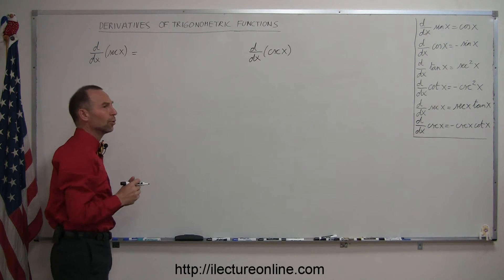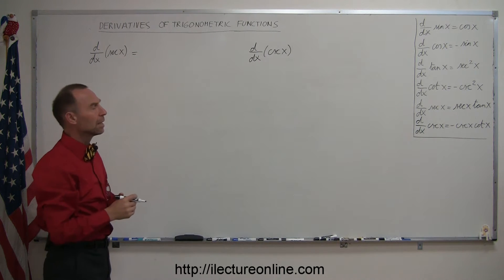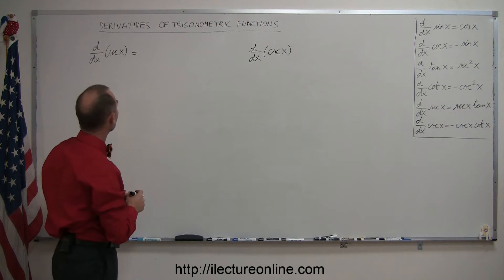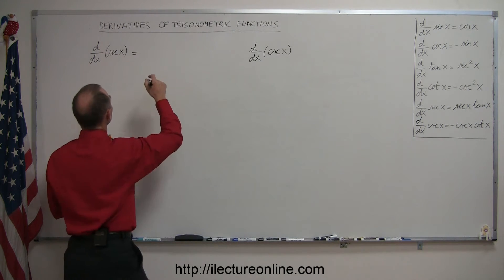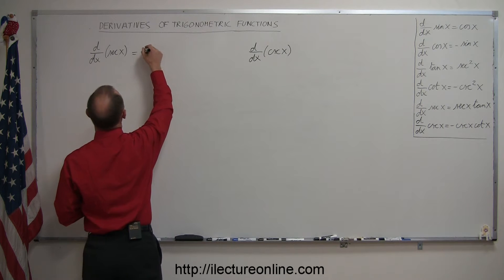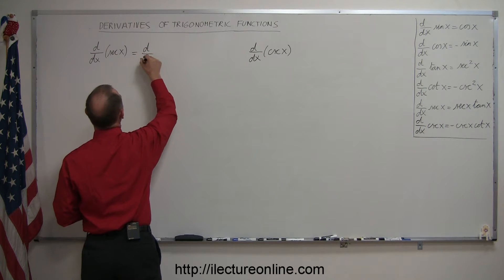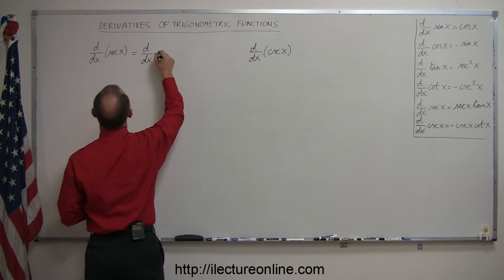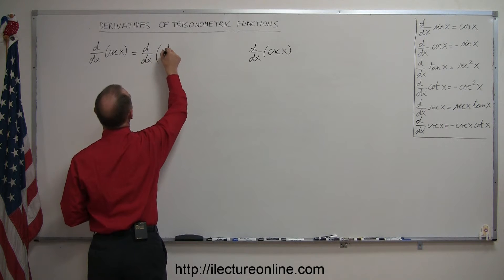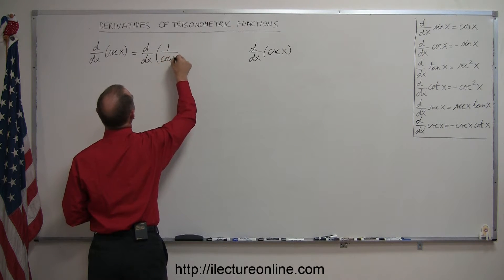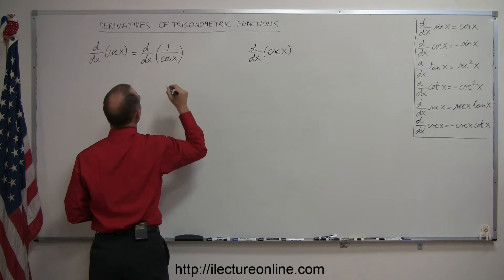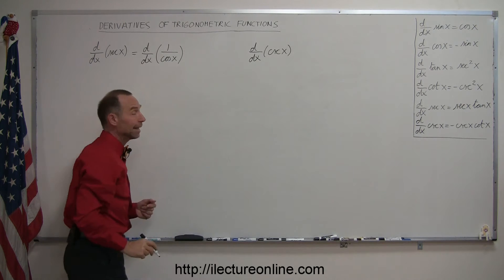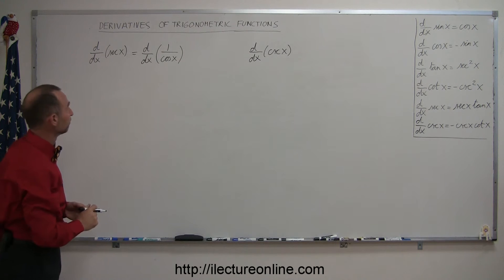The secant of x is equal to 1 over the cosine of x. So we can write this as the d/dx of 1 over the cosine of x, and then we're going to use the quotient rule.